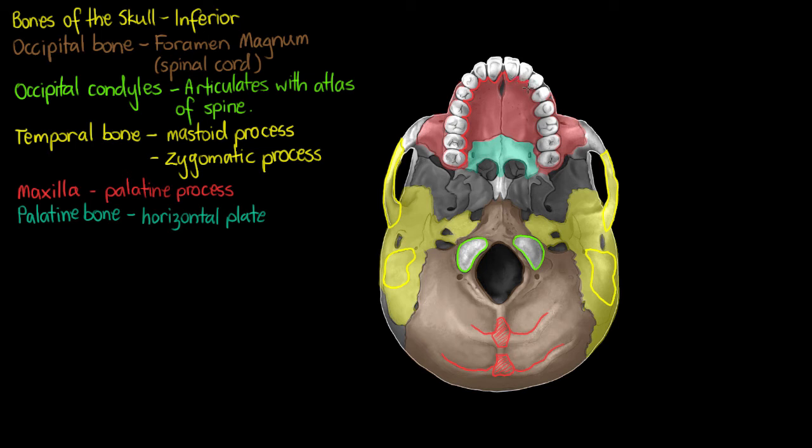The palatine process is that portion of the maxilla that's inside the mouth. Those two segments of bone are joining together to form the hard palate. So we have our hard palate inside the mouth made up of our maxilla and palatine bone.